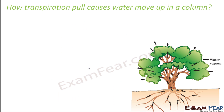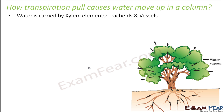Transpiration pull causes water to move up in a column. As we know, water is carried by xylem. Within xylem, the elements that carry water are the tracheids and the vessels, because xylem parenchyma and xylem fibers are for storage and support. So these two elements of xylem carry water and they are tube-like structures.